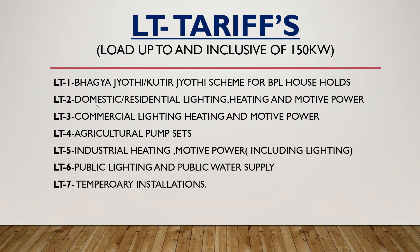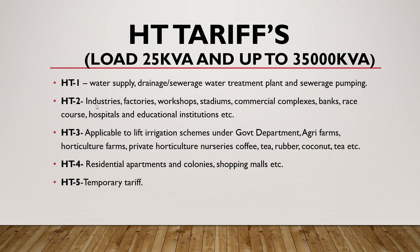Similarly, under HT tariff, if your load exceeds 25,000 kVA and up to 35,000 kVA, you can opt for HT-1 tariff. HT-1 is applied for water supply, drainage, sewerage, water treatment plants, and sewerage pumping, which is almost exclusively used by the government. HT-2 is used for industries, factories, workshops, stadiums, commercial complexes, banks, racecourses, hospitals, and educational institutions.